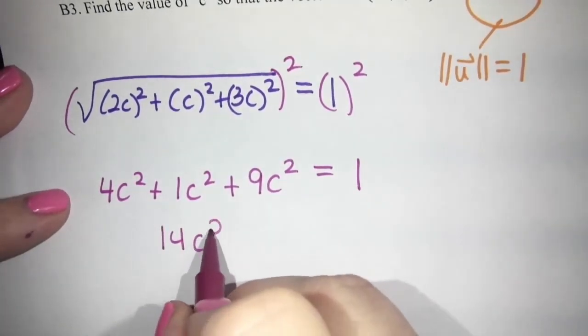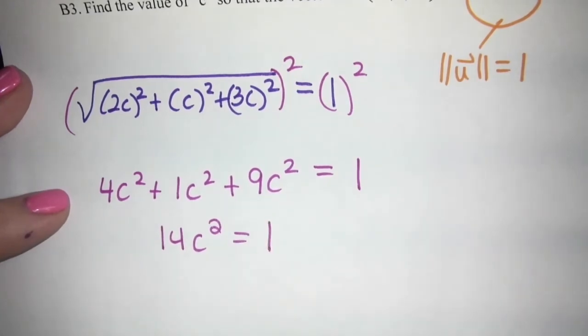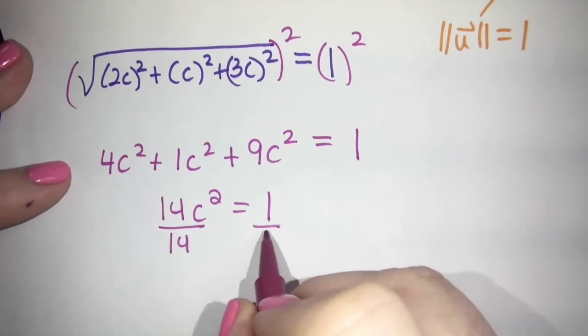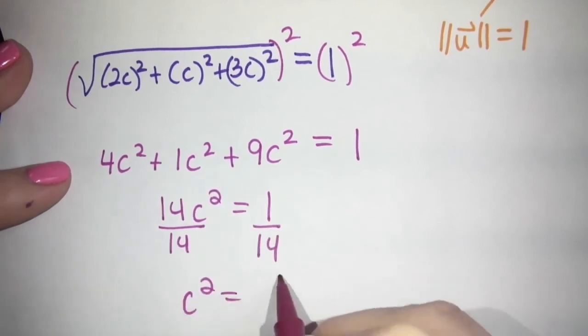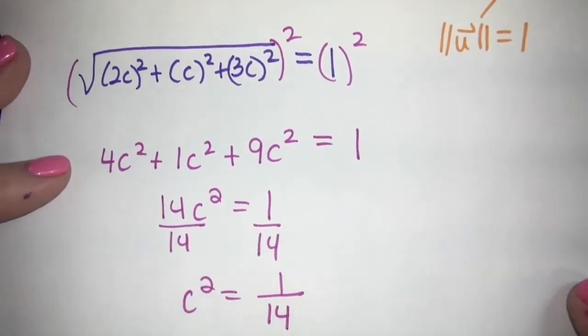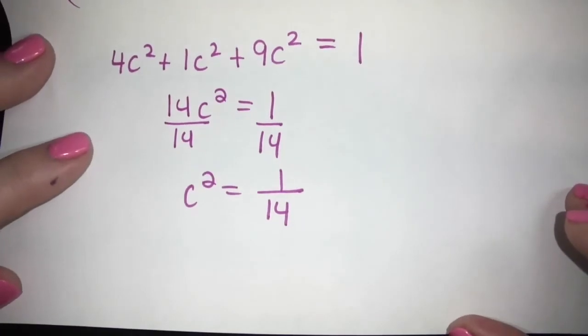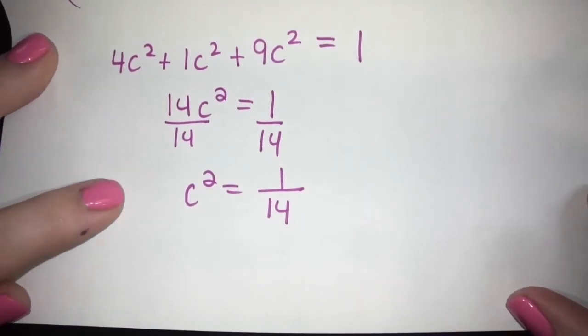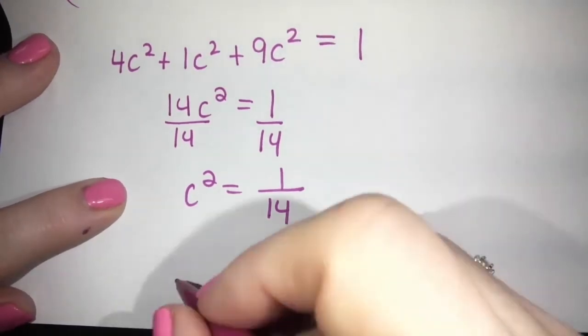And we solve that. So we divide both sides by 14. And unless you have C squared as 0, you will always get two answers. So C squared equals a number will always be plus or minus. So make sure you get two answers, unless it's C squared as 0. And then you just say 0. We don't say plus or minus 0.